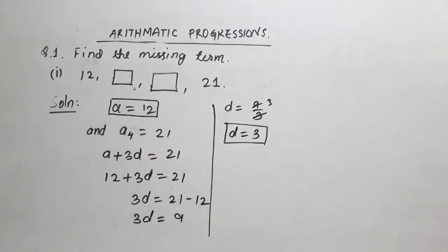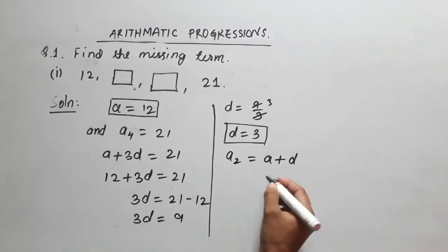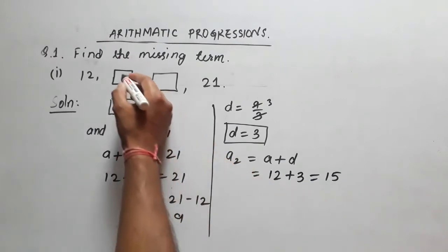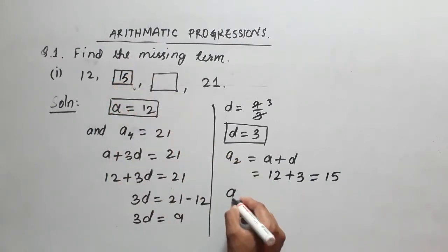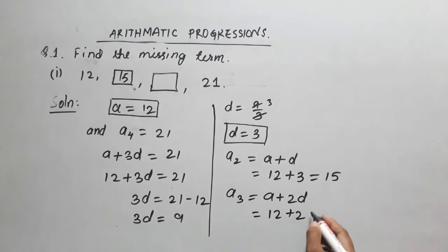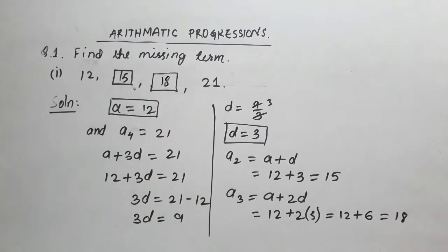Now that we have a and d, we can find the missing terms. The second term a2 equals a plus d, which is 12 plus 3 equals 15. The third term a3 equals a plus 2d, which is 12 plus 2 times 3 equals 12 plus 6 equals 18. So the missing terms are 15 and 18.